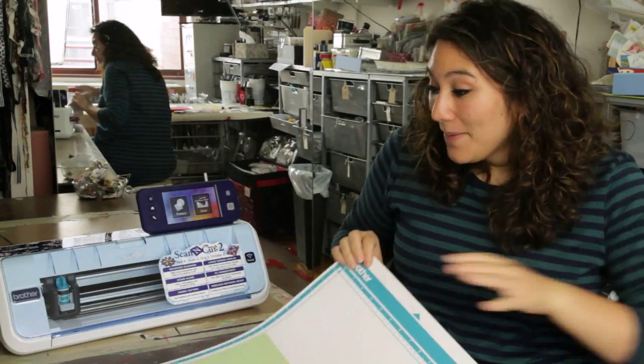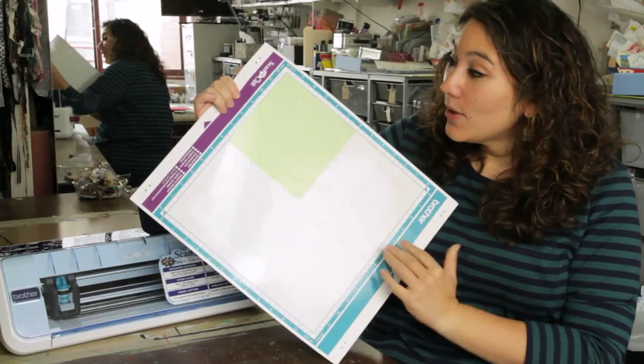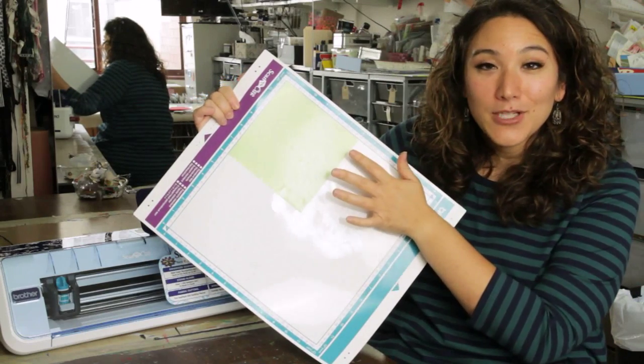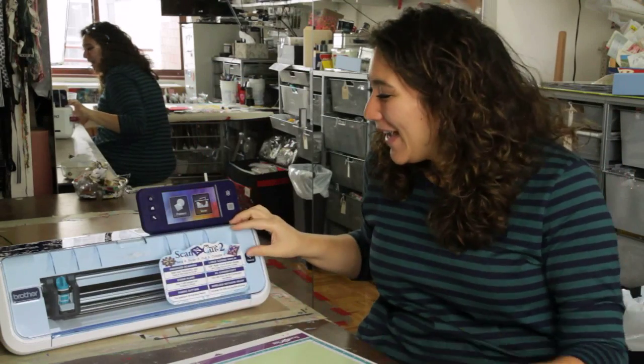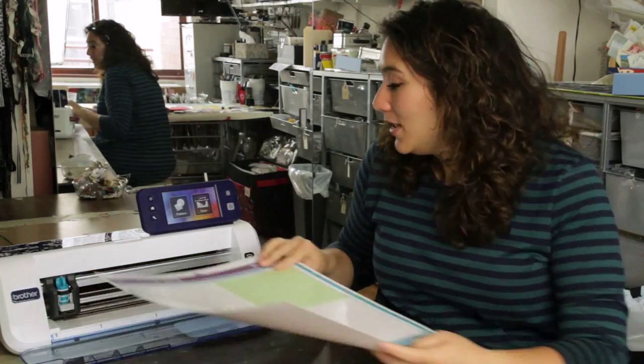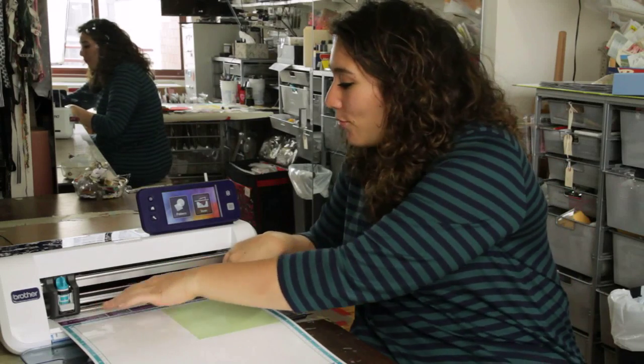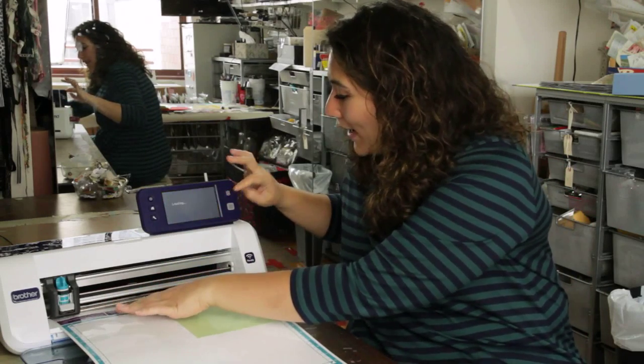So here on my mat you can see I have a smaller piece of the stencil material already cut and it's just put down onto a standard mat. So now I'm going to open up the machine and load in my mat right from the front, making sure to have two hands up there.